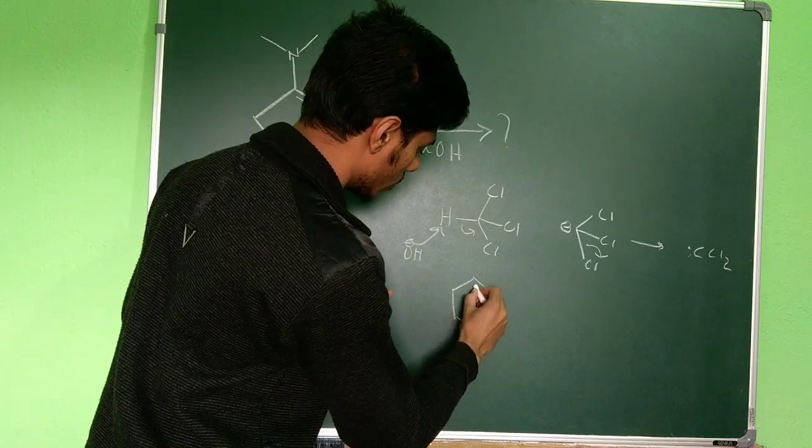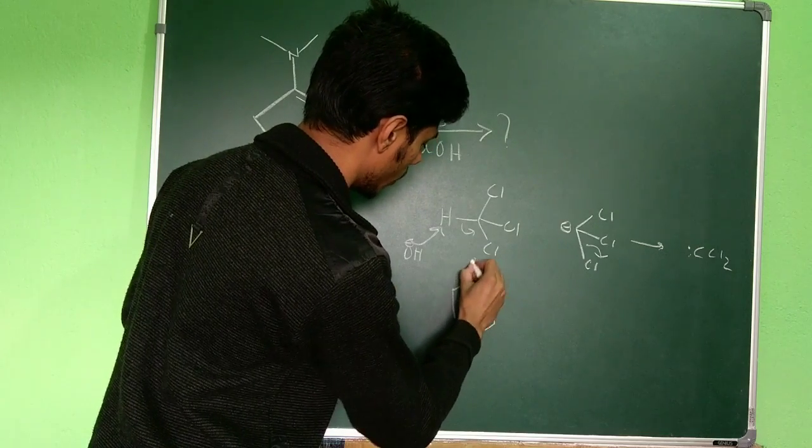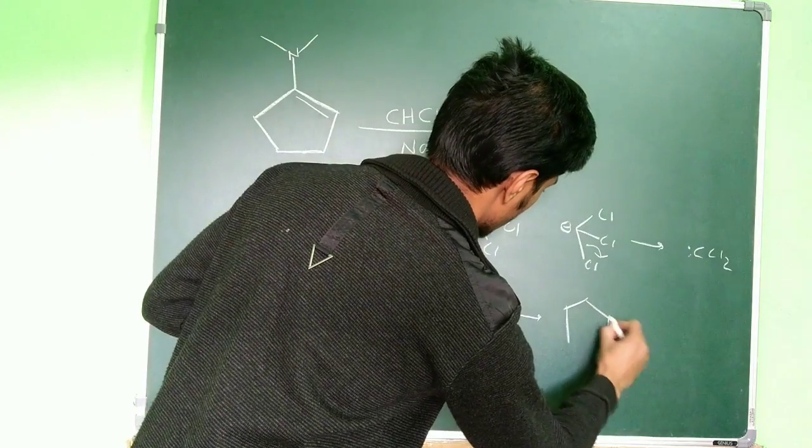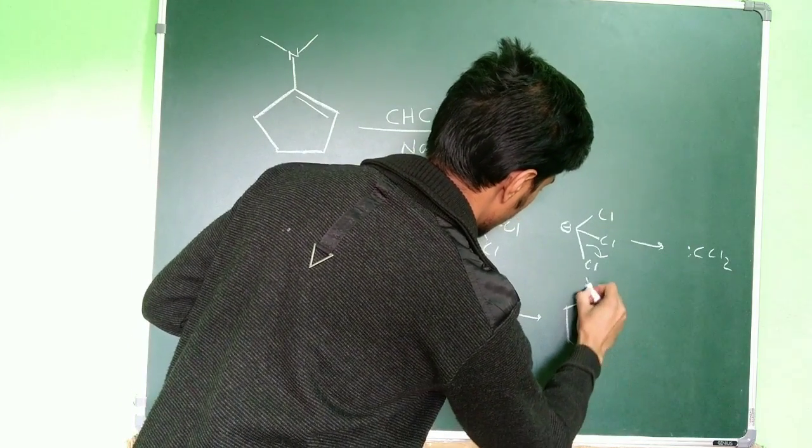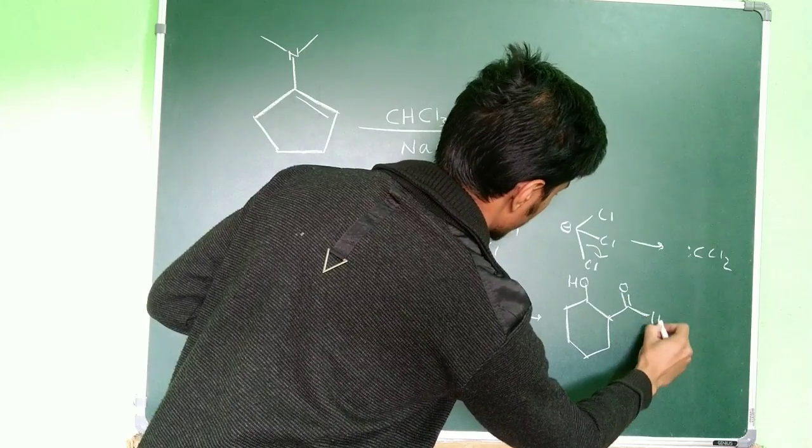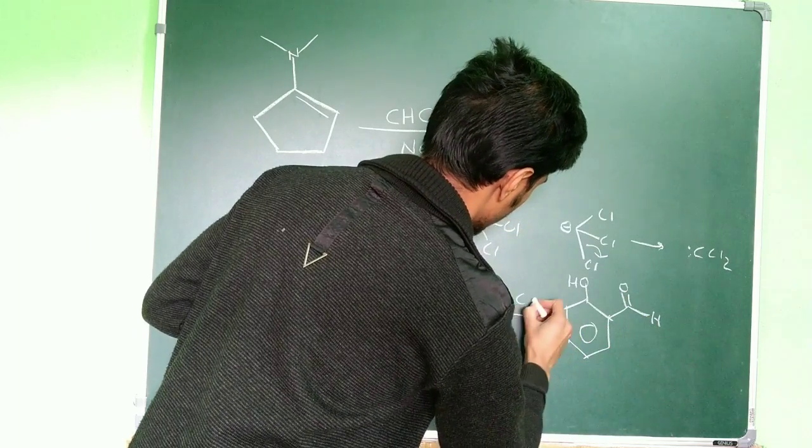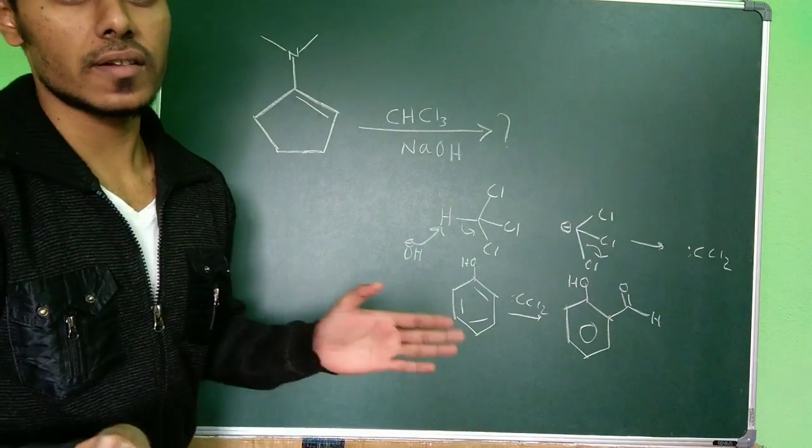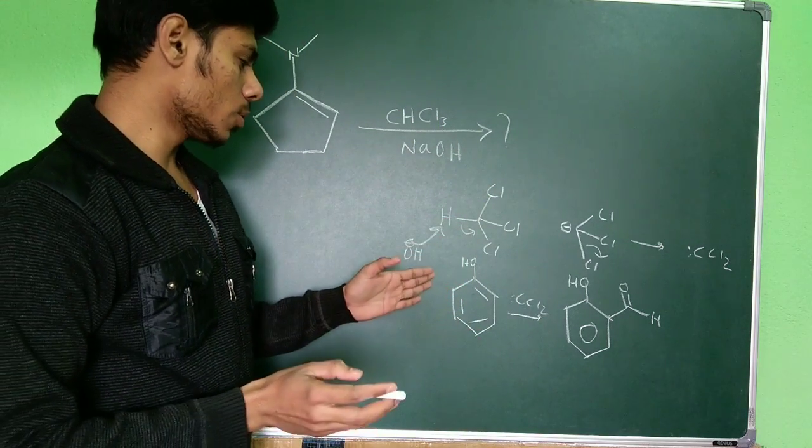You get this aldehyde, right? So one aldehyde, CCl2 generates over here with this reaction. So this is a very famous name reaction, the Reimer-Tiemann reaction.